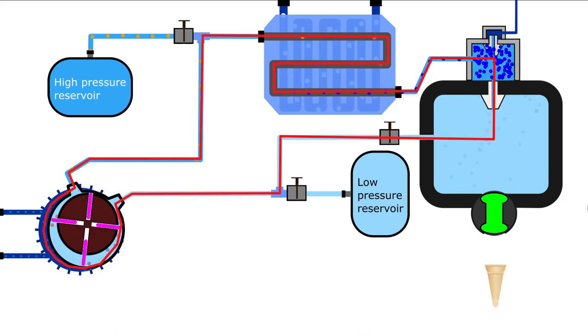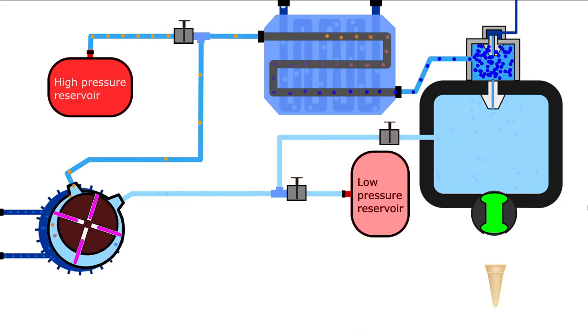This is the CO2 loop. High pressure and low pressure reservoirs are used in the loop to compensate for pressure loss and gain.